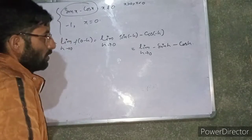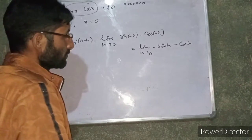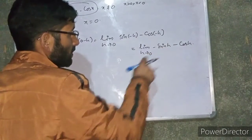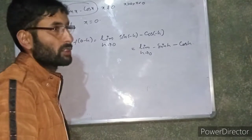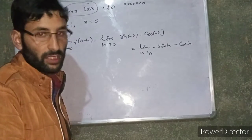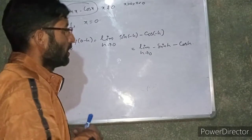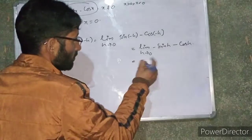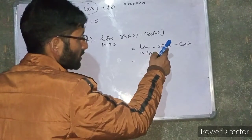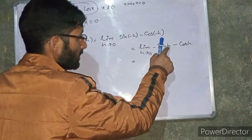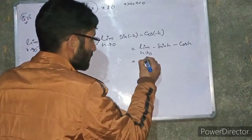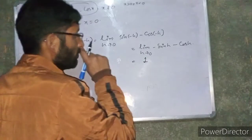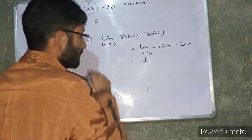At h equals 0, sin(0) equals 0 and cos(0) equals 1, so the left-hand limit gives 0 minus 1, which equals minus 1.